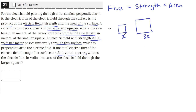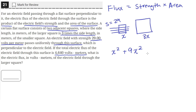Through these surfaces is an electric field whose strength — we'll just say s — is equal to 29 volts per meter. So first let's find the area of both squares added together. The area of the first square is x times x, which is x squared. The area of the larger square is 3x times 3x, which is 9x squared. Adding both together, we get 10x squared. That's the total area that the field is going through.